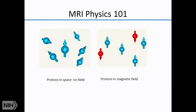MRI depends on hydrogen protons — which in the Earth's magnetic field spin in random directions. Think of them as tiny magnets uninfluenced by Earth's minute field. But in a strong magnetic field, you can get them to align either with or against that field. It's a slightly lower energy state to align with the external field, so you get a slight preponderance of spins aligned with it — and that is the entire basis for MRI.